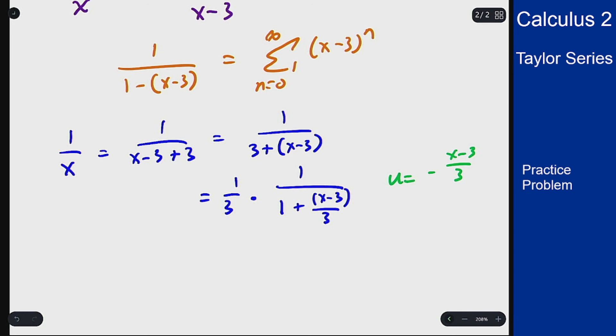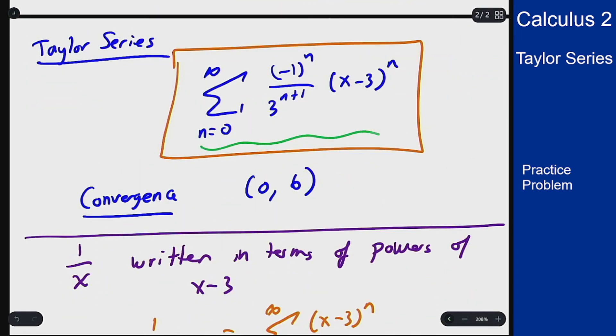I will get that this I can write as 1 third sum n from 0 to infinity of negative x minus 3 over 3 all to the n. And if you rearrange and combine terms here, this ends up matching exactly the expression that we have up here for the series.